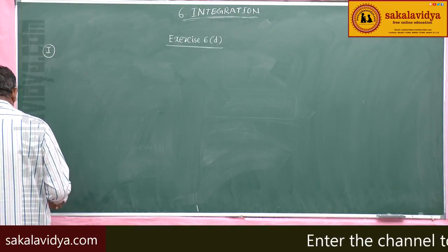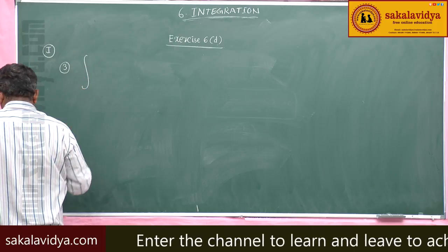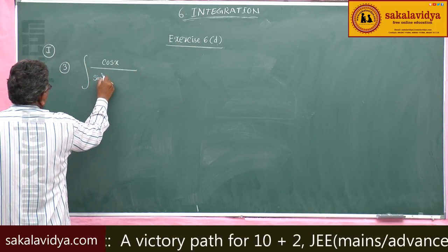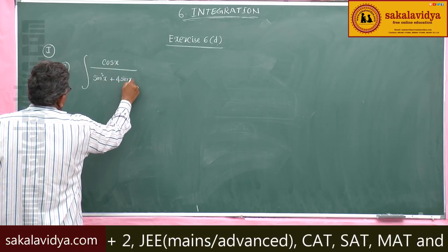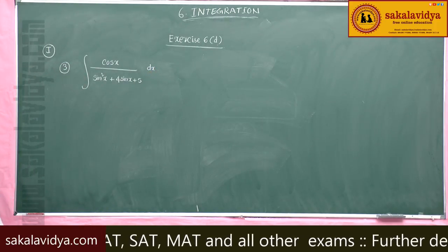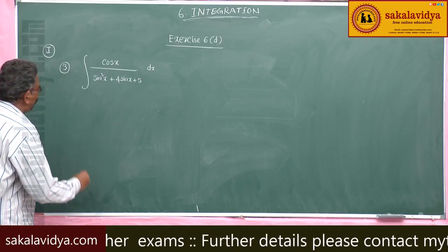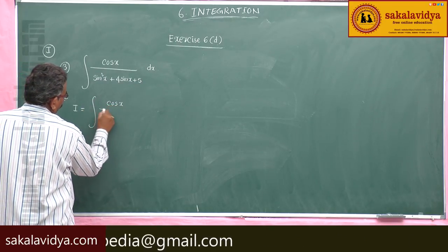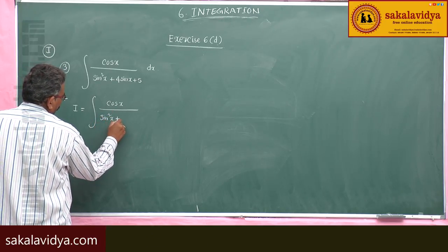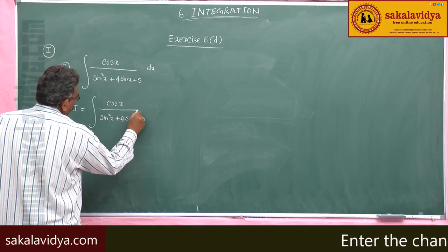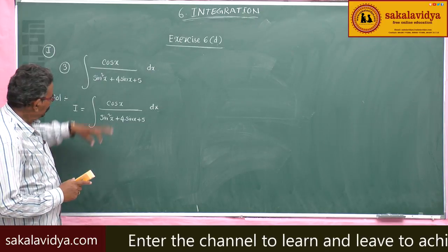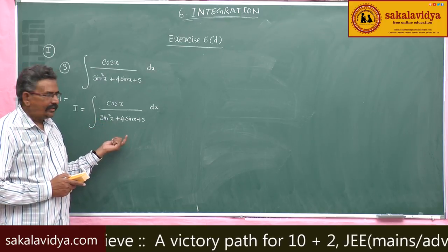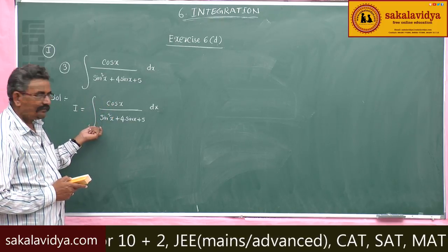Third problem: evaluate integral of cos x by sin²x plus 4 sin x plus 5, dx. I is equal to integral of cos x by sin²x plus 4 sin x plus 5, dx. If you observe this problem, cos x is the derivative of sin x. So if we say sin x equals t, this problem becomes 1 by a quadratic factor in terms of t.